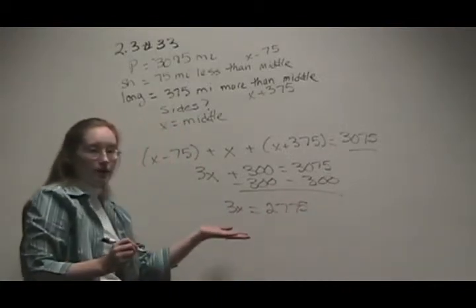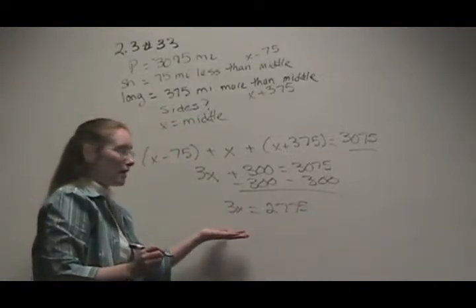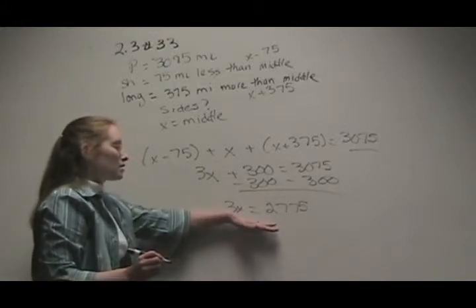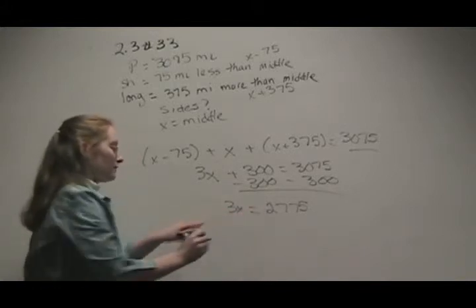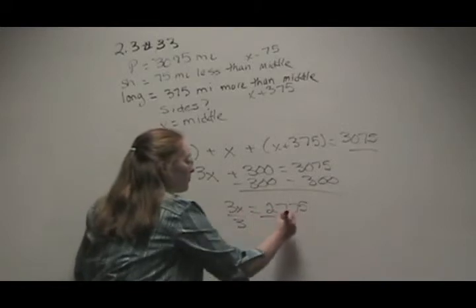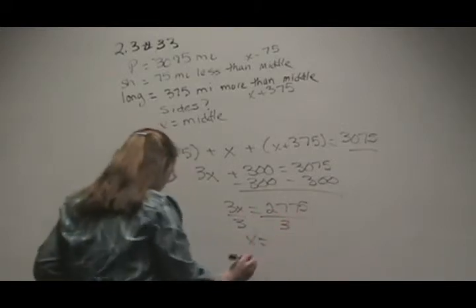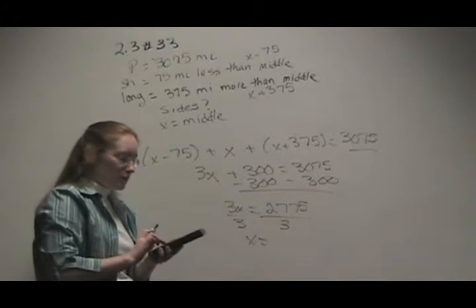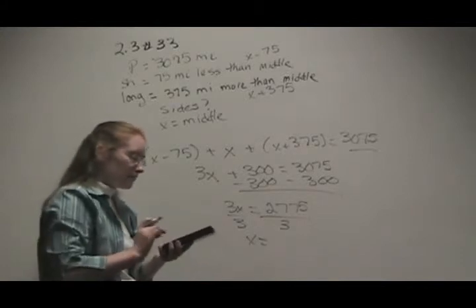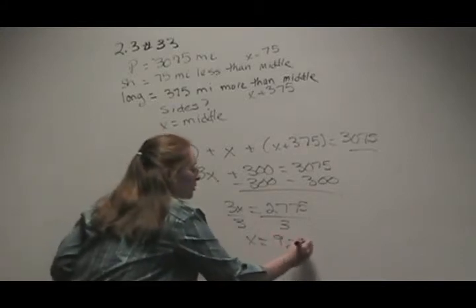Now, of course, you could use your calculator there if you couldn't do that in your head. Now, at this stage, we want the x alone, so we're going to divide both sides by 3. So x equals, and I'm just going to get out the calculator, but this wouldn't be too hard to do in your head, 925.